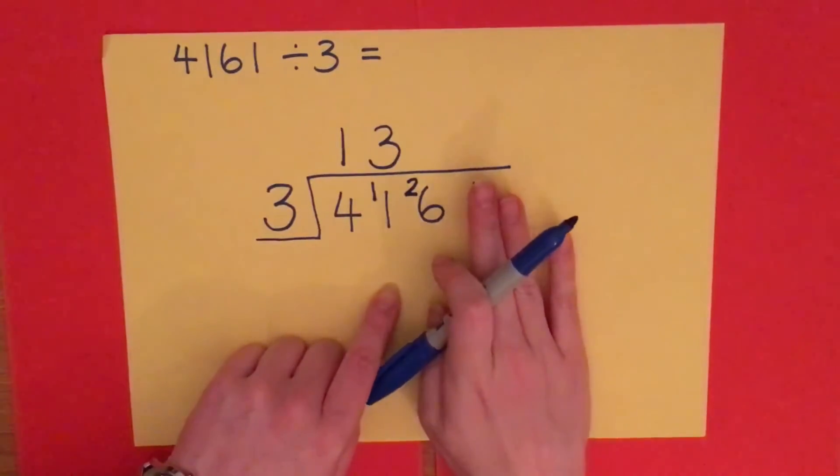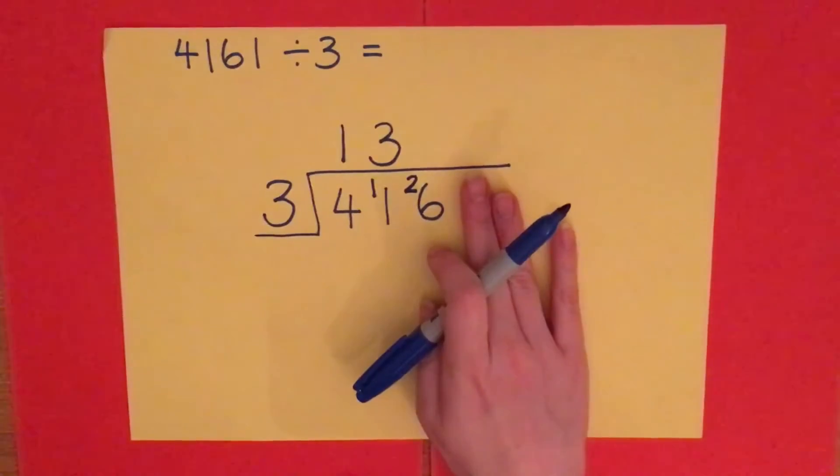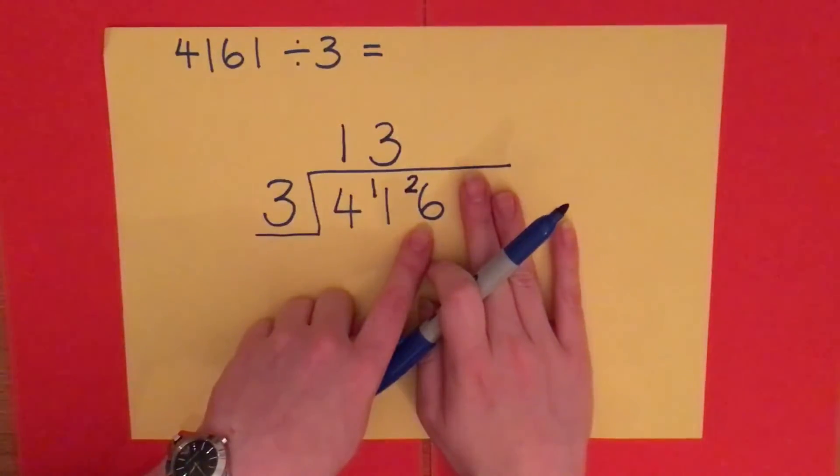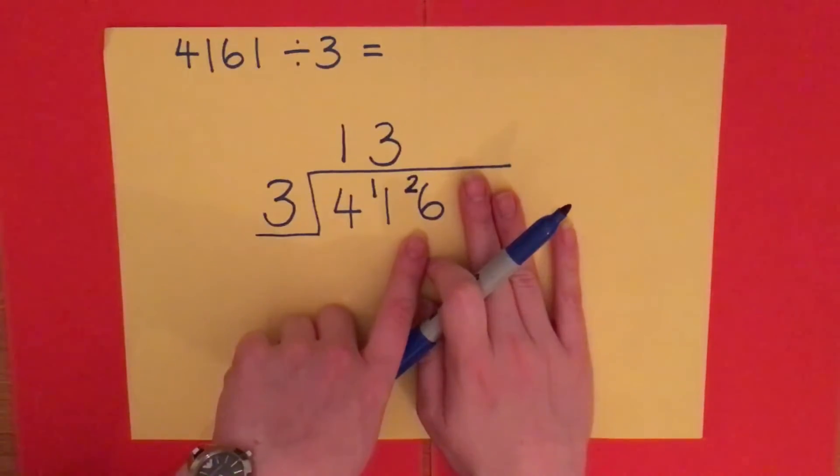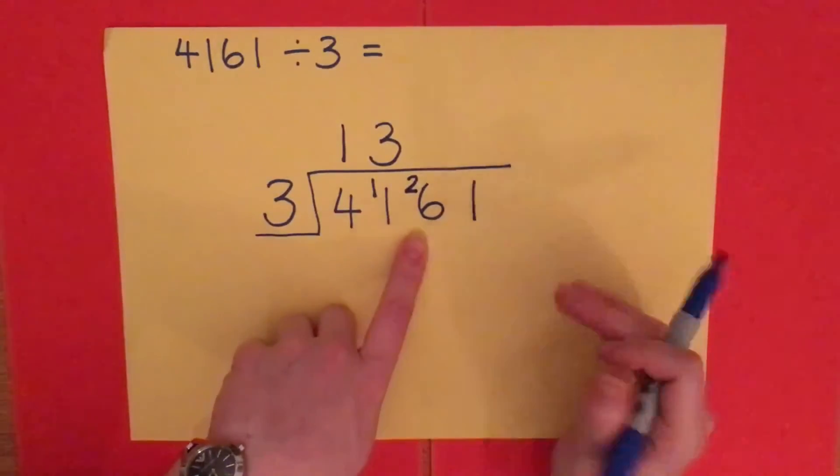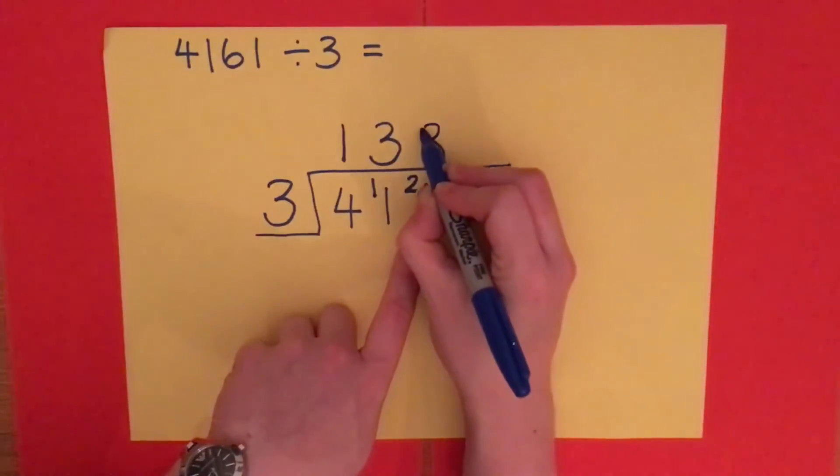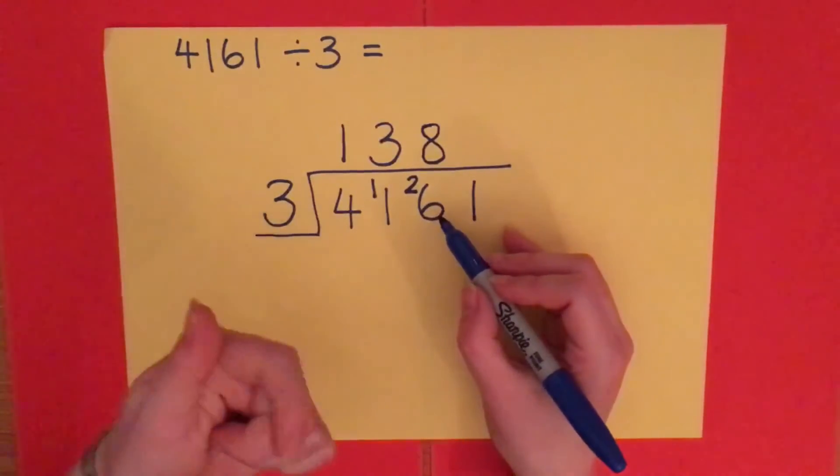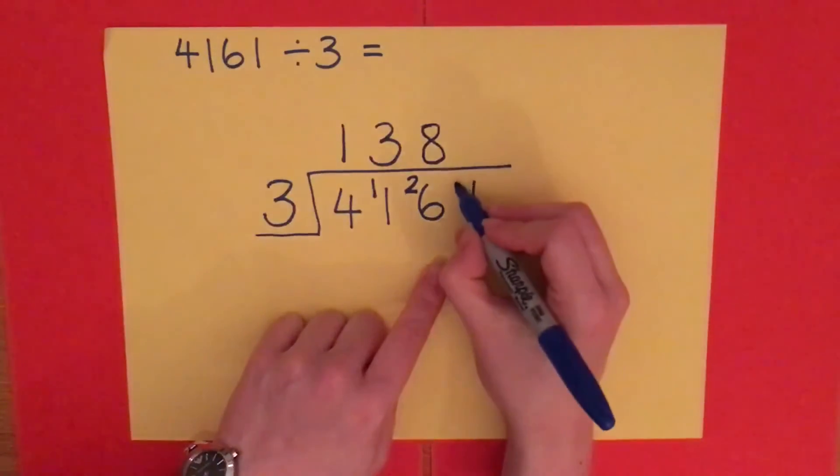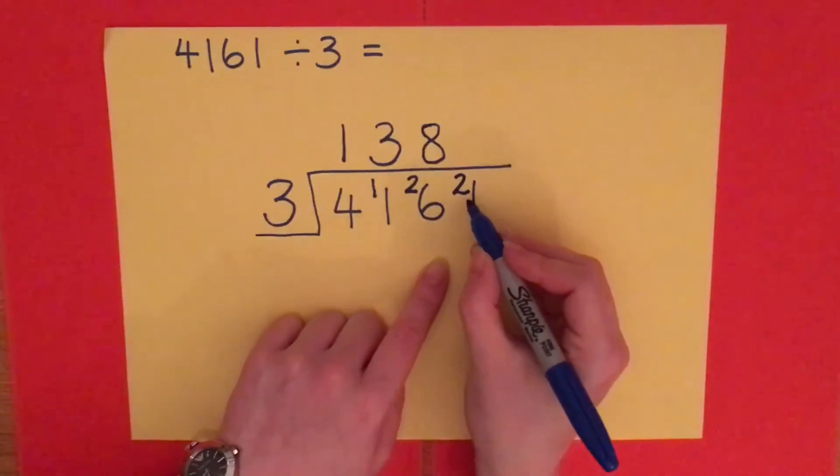I'm now looking at how many threes can get me as close as possible to 26. So 3 times 8 is 24. 3 times 9 is 27. That would be too many. So I'm going to have to go for 3 times 8. That's the closest I can get. That makes 24, and I have 2 left over. 24, 25, 26. So I carry that 2 over with me as a remainder.